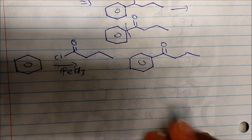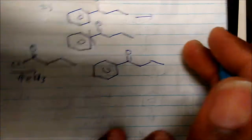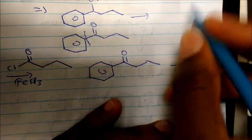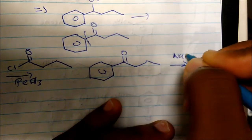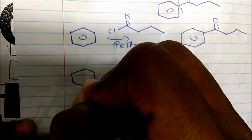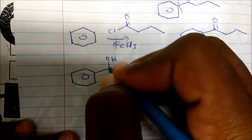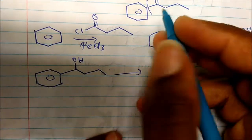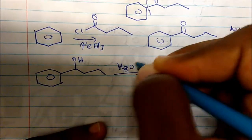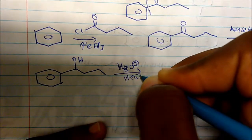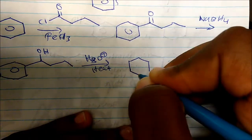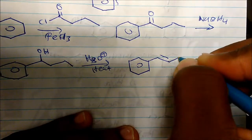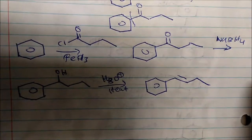How do we get ketones to alcohols? We reduce. I could use sodium borohydride again — a mild reducing agent — and we get our alcohol. Then to get alkenes from alcohols, we simply take any acid and heat, and that will give us the desired alkene product.